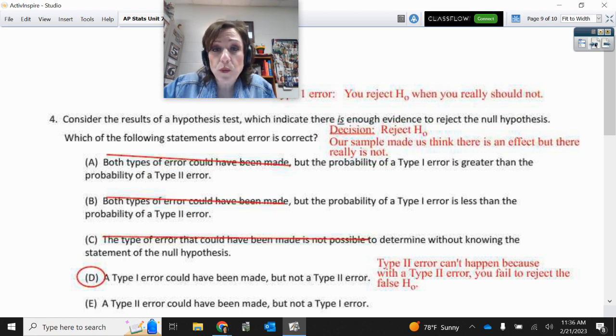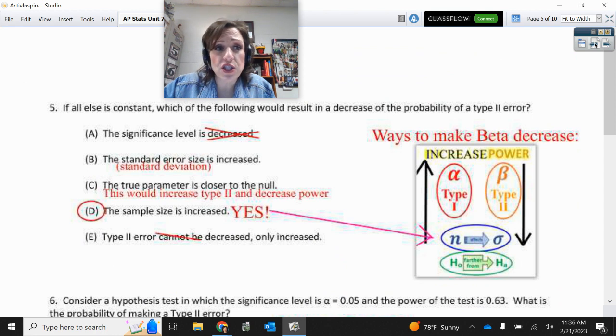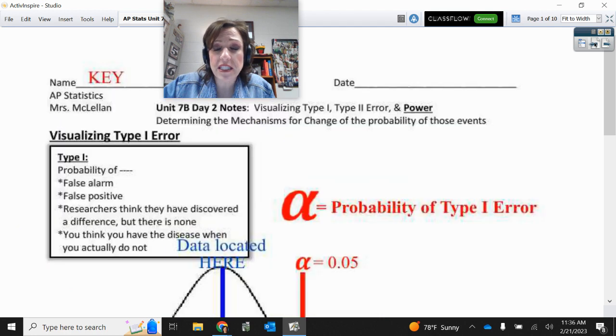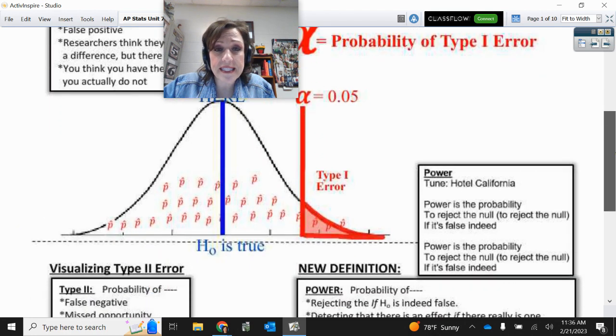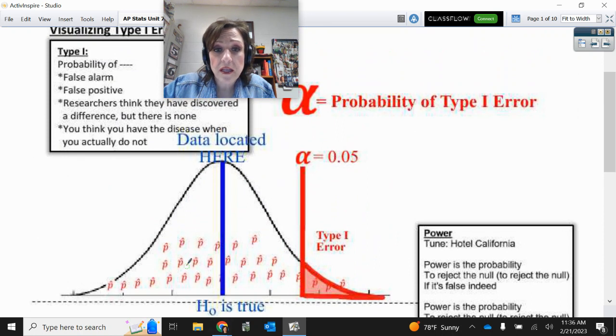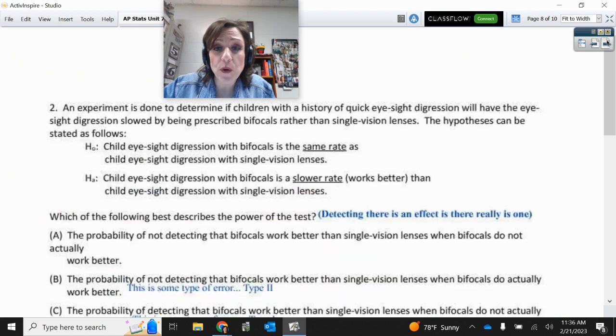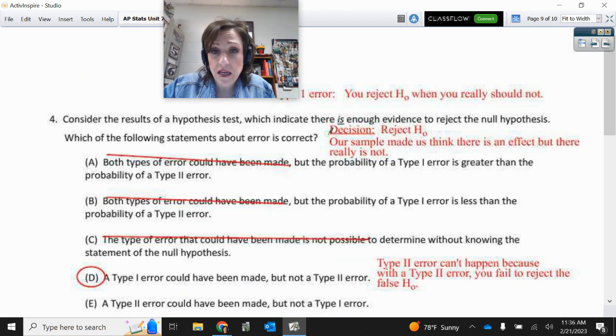Which one of the errors gives you evidence to reject the null if it is indeed true? So we want to reject the null. If you reject the null, that could happen here with a Type I error if you rejected the null but you should not have. So their evidence led them to reject the null, so that would have been an error if they were not supposed to have rejected it. Our sample made us think there is an effect but there really is not one. That's a Type I error.